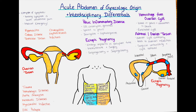Hemorrhage from an ovarian cyst is the next cause of acute abdomen. This occurs most frequently with a subtype called a functional ovarian cyst — a fluid-filled cyst that develops when an oocyte is not released normally from the ovary but becomes stuck inside and fluid accumulates around it. The cyst usually resolves spontaneously, but in rare cases it can rupture and cause a hemorrhage, with blood entering the pelvis and lower abdomen. More information is available in our video on ovarian cysts.